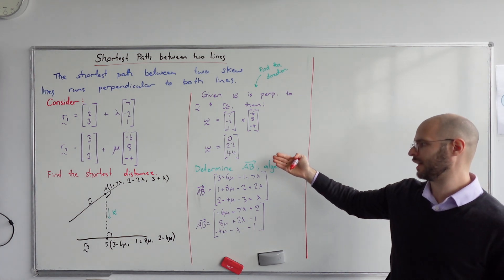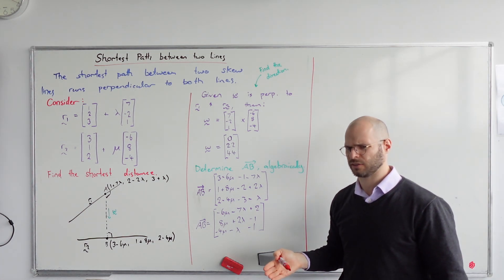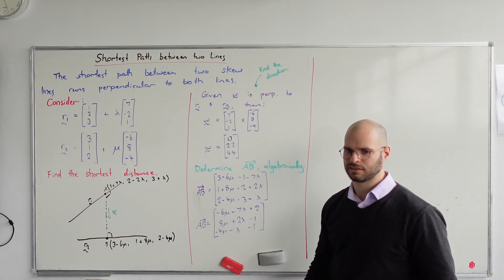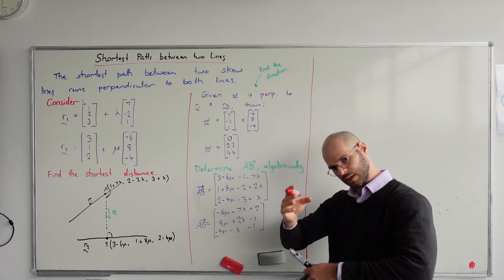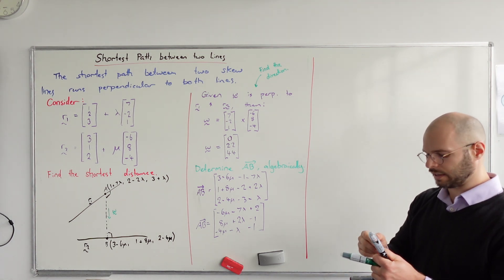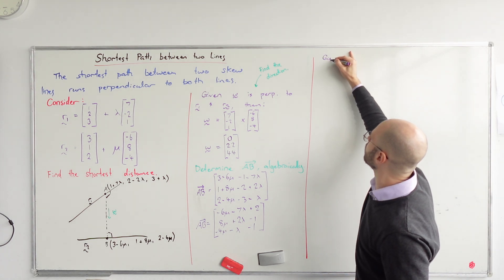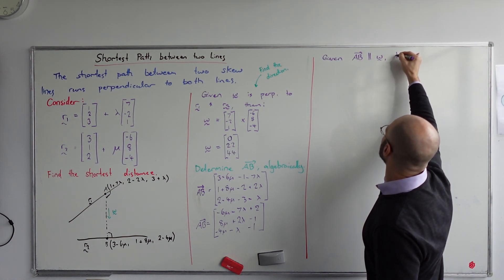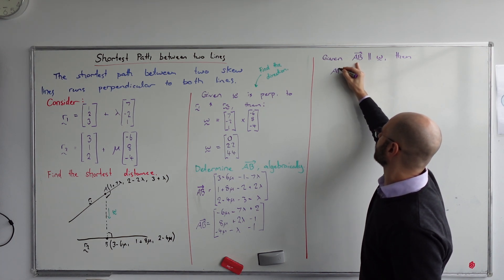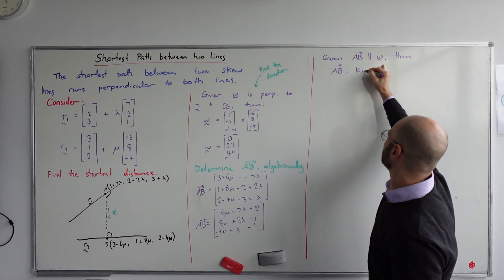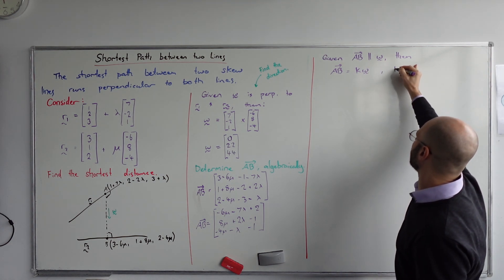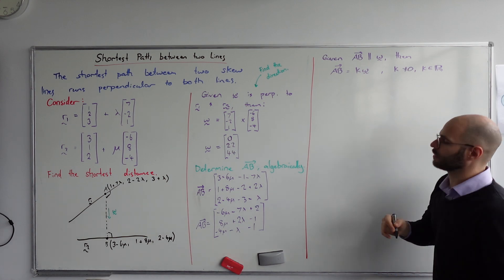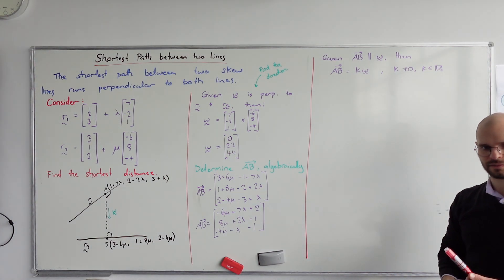Final thing we need to do is relate the direction vector and this vector together. What relationship are we expecting to see between direction vector W and position vector AB? Parallel. They won't be coincident, but they will be parallel. Because they're parallel, what we know is that AB equals KW, where K is a non-zero, hopefully a real number.